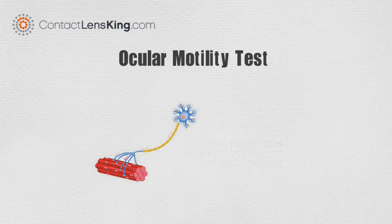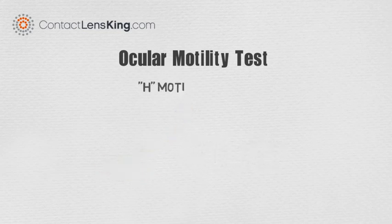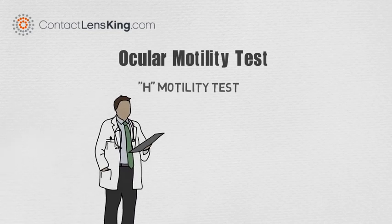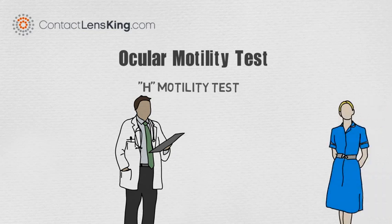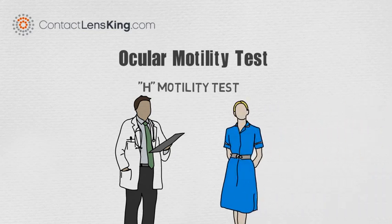These eye muscles can be assessed by applying the H-Motility Pattern Test. When testing motility, a doctor instructs a patient to keep their head still while following a finger or other object with their eyes, as it traces an H pattern in front of them.